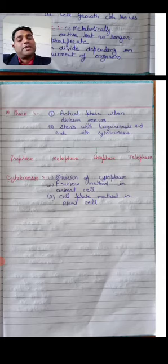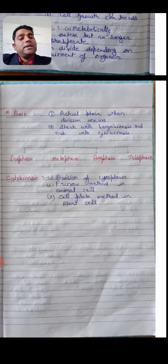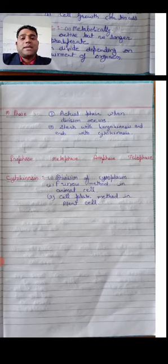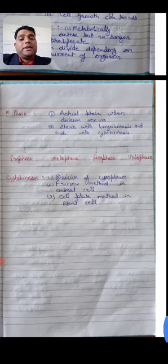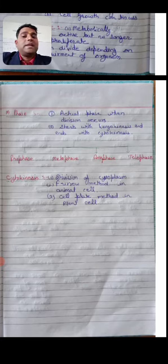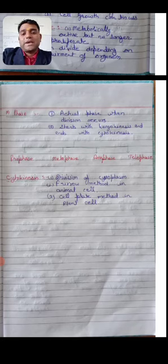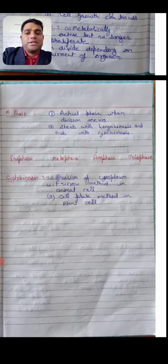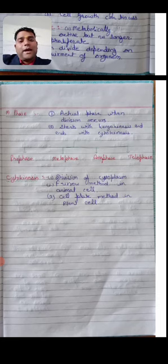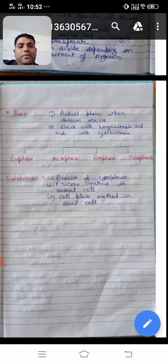In cytokinesis, the cytoplasm divides into two parts. Animal cells and plant cells have different methods of cytokinesis. In animal cells, the furrow method is used — division proceeds from the outer side to the inner side. In plant cells, the cell plate method is used — division proceeds from the internal side toward the outer side. I hope students that you understood this lecture well.